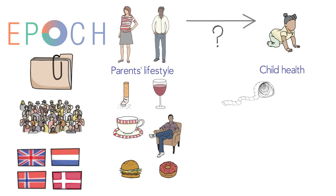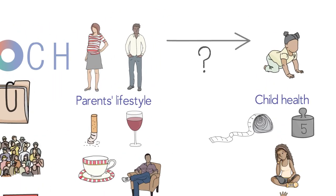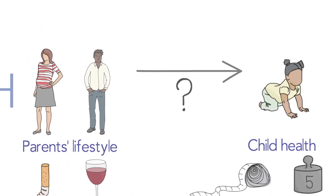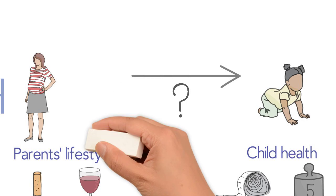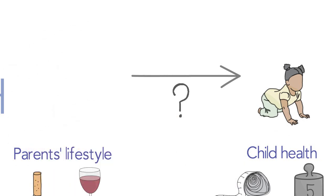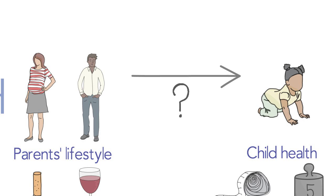Such as height and weight, body fat, behavior, and even how well the children do at school. And where it looks like there is a causal effect, we're also going to try to work out whether it's the mum's lifestyle, the dad's, or a combination that's the most important.